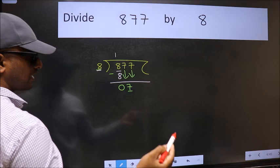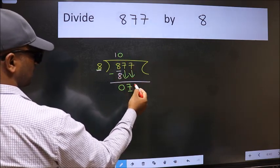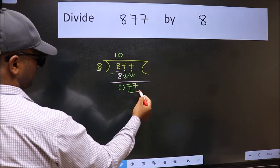And the rule to bring down second number is we should put 0 here. Then only we can bring this number down.